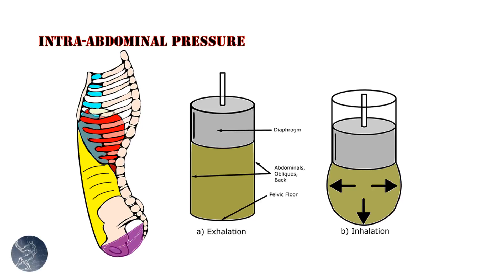The Valsalva maneuver is a breathing method used in weight lifting, but also for clinical purposes. It involves taking a breath and breathing out against a closed glottis — basically keeping your mouth closed and trying to blow out. Some people describe this as being identical to bearing down, but they are not equivalent, although bearing down also does increase intra-abdominal pressure.